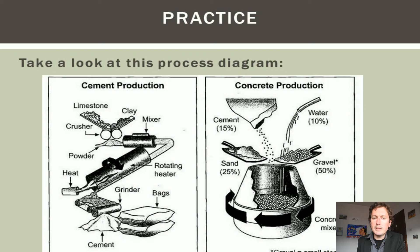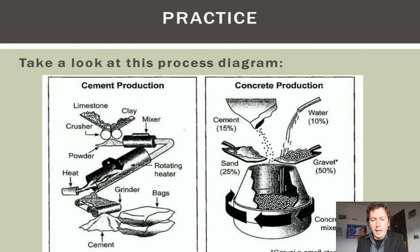The important point for today's lesson is that we can use the passive voice when describing almost any process in an IELTS writing task 1 process diagram. We could say: the limestone and clay are crushed; they are mixed; the mixture is heated; and it is ground; then it is bagged. A lot of these nouns simply become verbs, and those verbs become passive voice. In the second part of the diagram, concrete is made — we can use verbs like 'to put', 'to add', and 'to mix'.